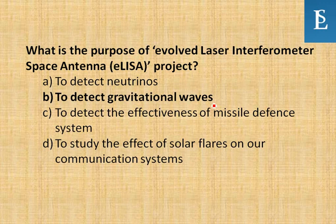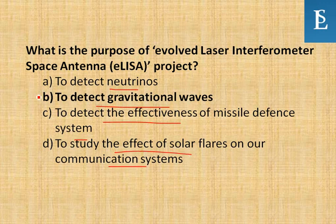What is the purpose of the Evolved Laser Interferometer Space Antenna — the ELISA project? Options include: to detect neutrinos, to detect gravitational waves, to detect the effectiveness of missile defense systems, or to study the effect of solar flares on our communication system. The answer is to detect gravitational waves. ELISA is for detecting gravitational waves.